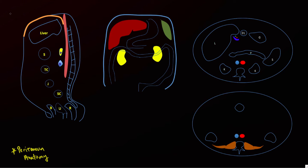Let's start with the sagittal diagram to orient everyone. On this diagram, anterior is on one side and posterior the other. The structures labeled are: S for stomach, T for transverse colon, J for jejunum, SC for sigmoid colon, the bladder, uterus, rectum, pancreas, and duodenum. We'll start by drawing the parietal peritoneum as it lines the hemidiaphragm.